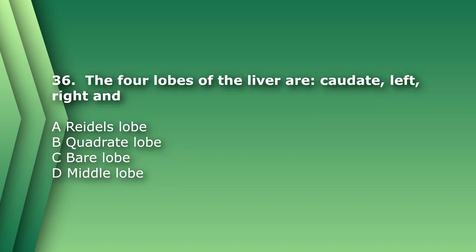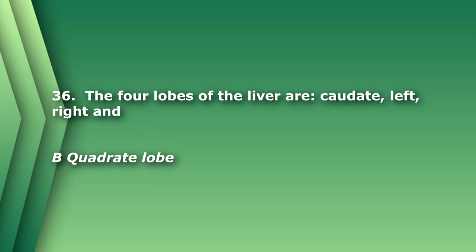Number 36. The four lobes of the liver are caudate, left, right, and: A. Riedel's lobe. B. Quadrate lobe. C. Bare lobe. Or D. Middle lobe. The answer is B, quadrate lobe.